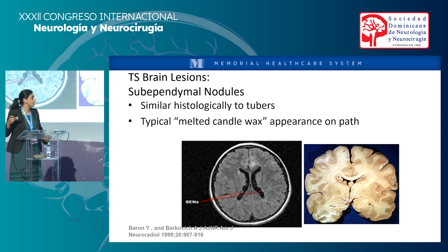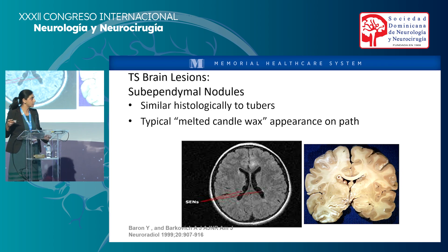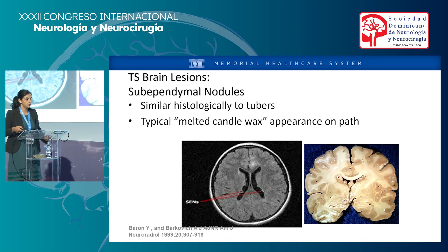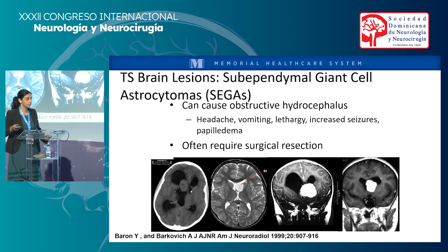Here are the sub-ependymal nodules that I mentioned that line the ventricles. From a pathology perspective, the gross path appearance is described as typical melted candle wax. And here's just another depiction of the SEGA, often requiring surgical resection. Something I found interesting — symptomatic SEGA is quoted at about 6 to 9% of people with TSC, usually occurring at ages 10 to 30. The youngest I saw was 1.5 years of age.